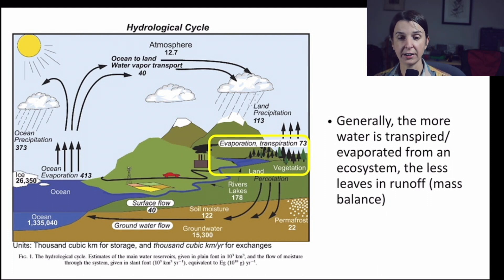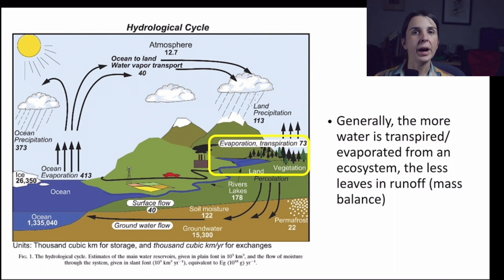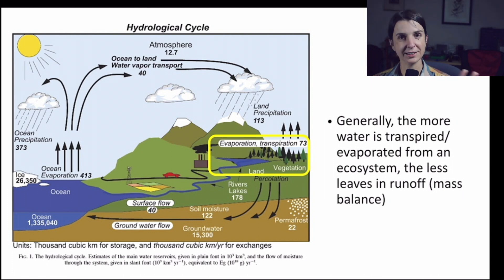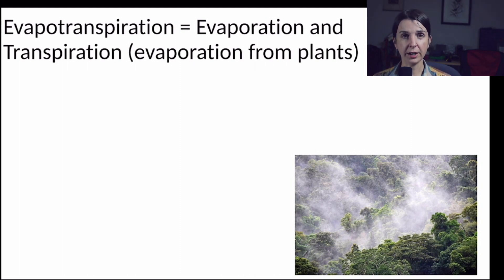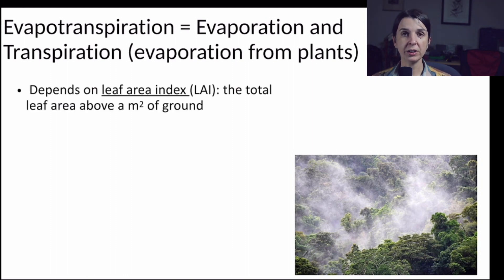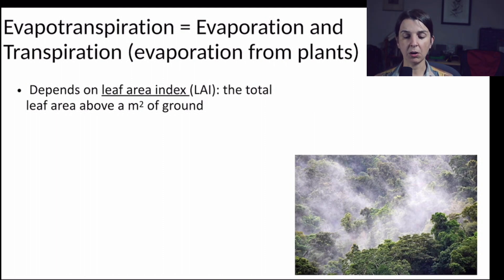There are physical factors that affect the rate of evapotranspiration, usually the climate — how warm it is is going to affect evapotranspiration. But there are biological controls on this process too, and as such, those are of interest to us as ecologists. It turns out that one of the strongest biological controls on evapotranspiration is the total amount of leaf area in an ecosystem. We usually describe this based on something called the Leaf Area Index, or LAI.